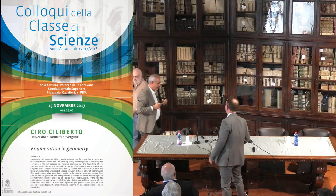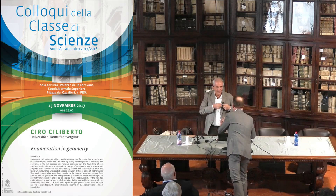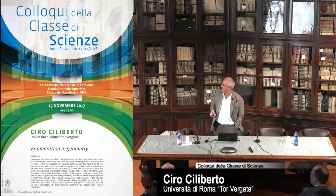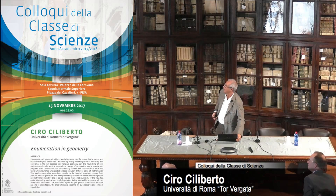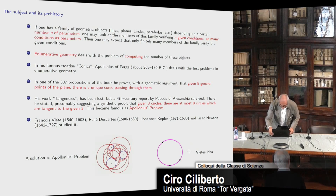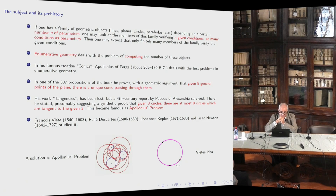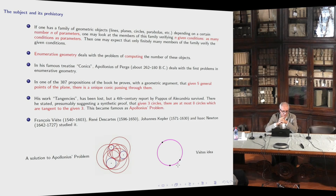Thank you very much for the invitation and for the kind words. Let me start by explaining the topic. What is the subject and what is the prehistory? If one has a family of geometric objects depending on a certain number of parameters, one may look at members of this family which verify as many conditions as the number of parameters. One expects that the solutions are finitely many. Enumerative geometry deals exactly with the problem of computing the number of members of such families enjoying these properties.